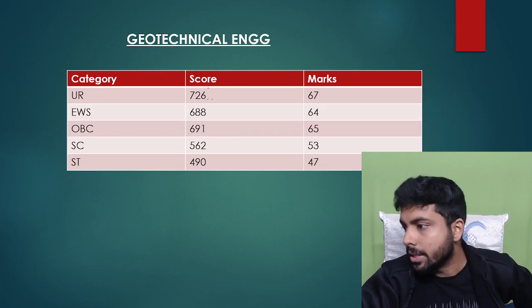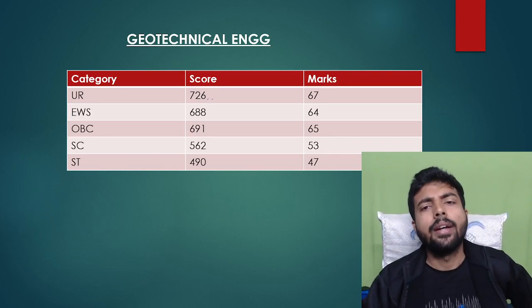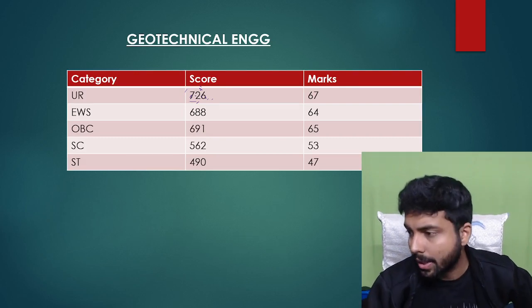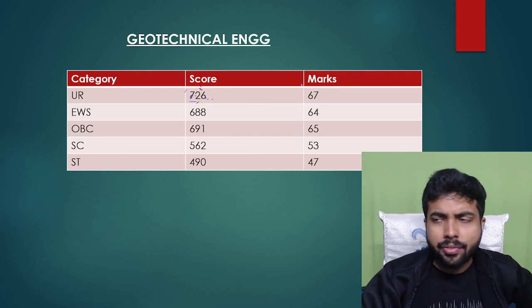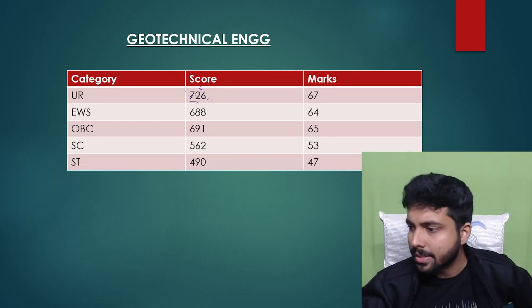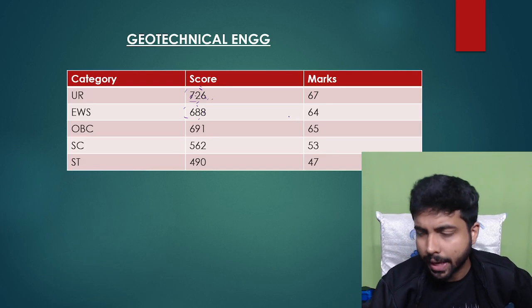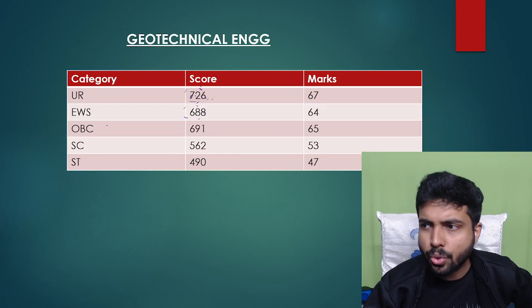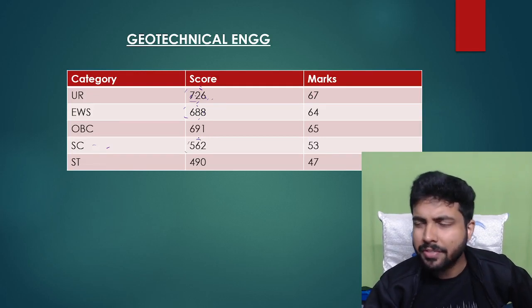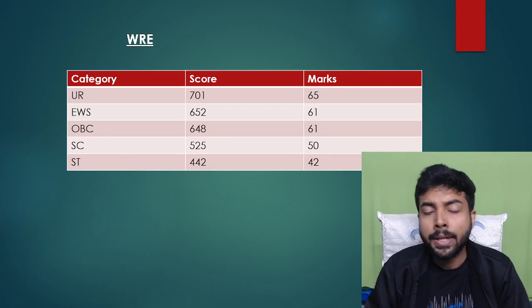Geotechnical Engineering cutoff has actually decreased slightly this year compared to last year. It is around 726, which is about 66 to 67 marks for general category. In additional rounds, the cutoff dropped further due to available seats, so even 63 to 64 marks could get you in. EWS requires 688 score, about 64 marks. OBC category needs 61 to 62 marks. SC needs about 52 marks, around 555 to 568 score. ST can get in below 500 — around 480 to 490.